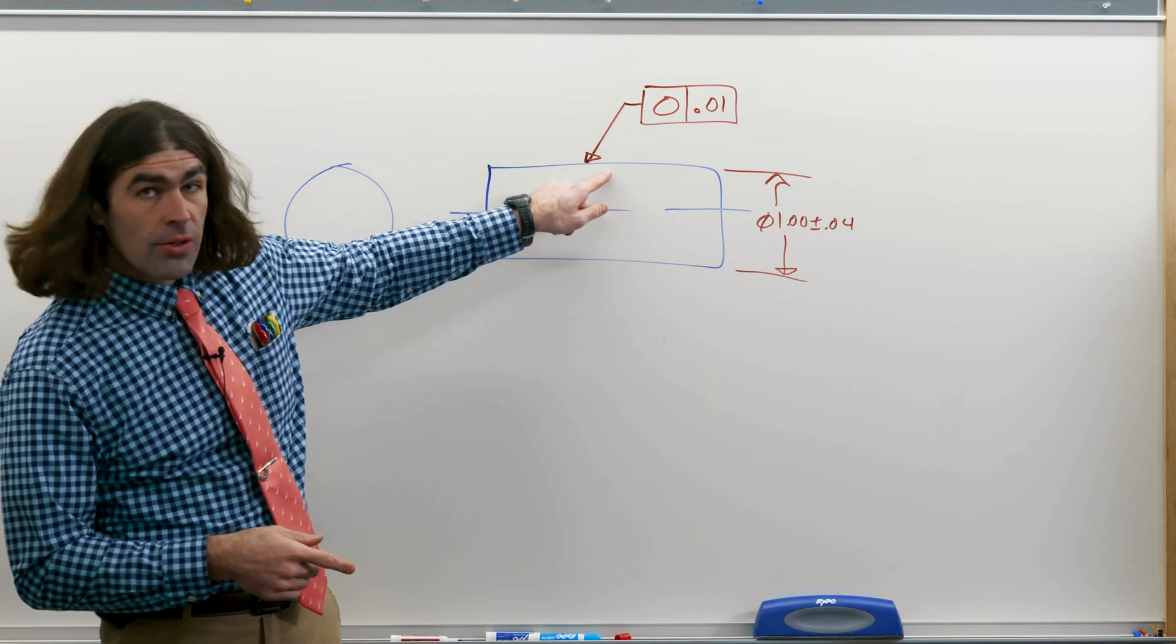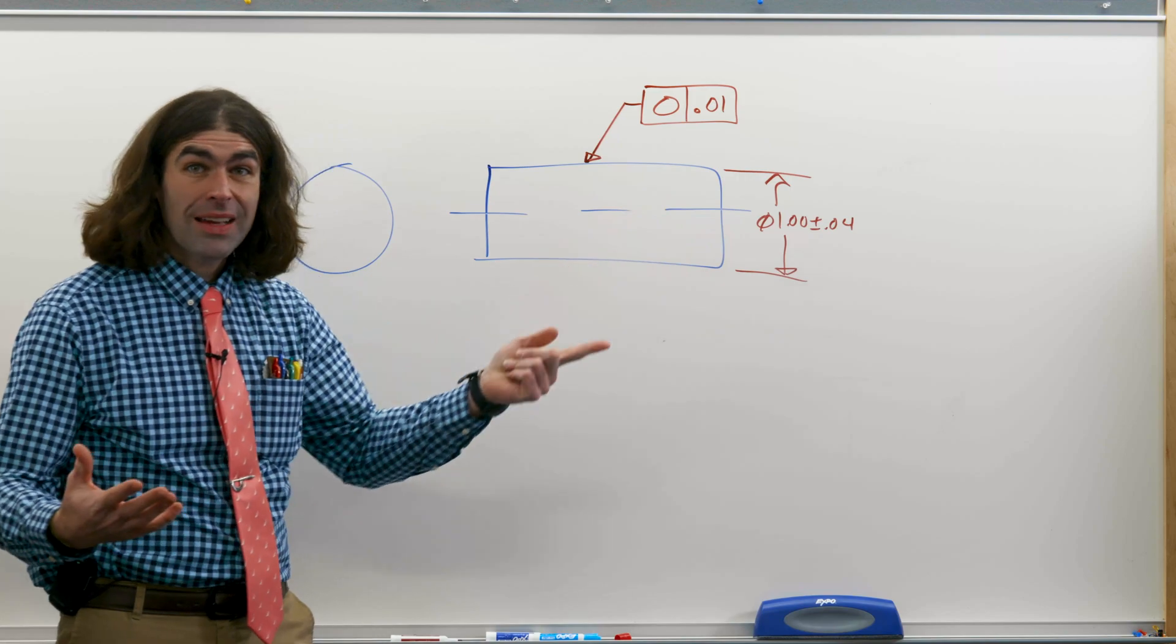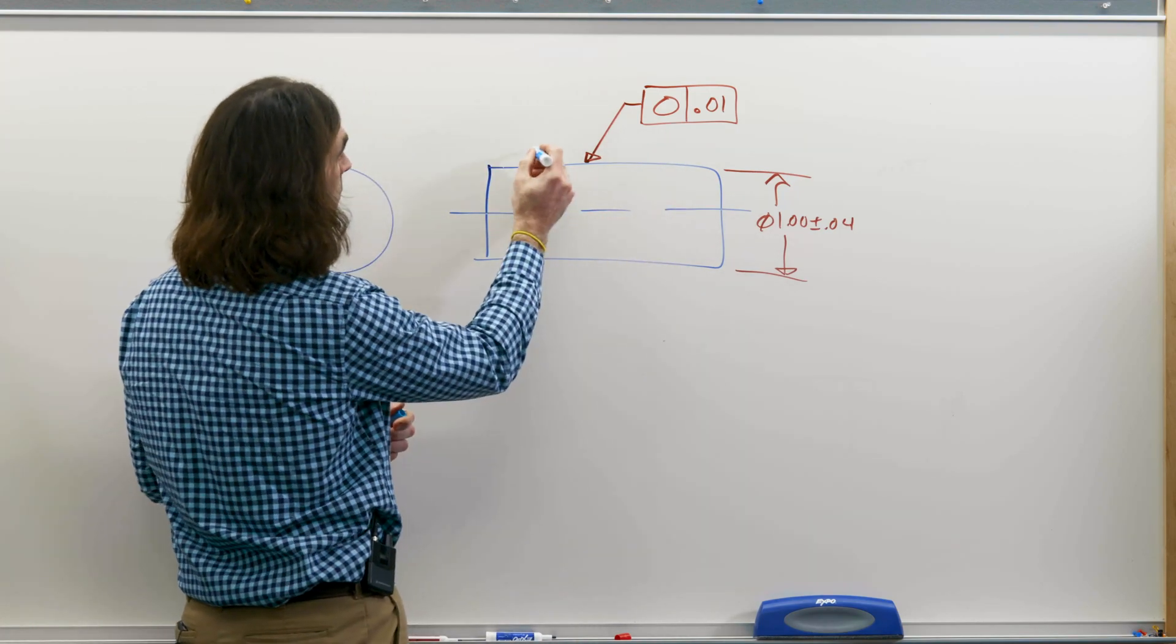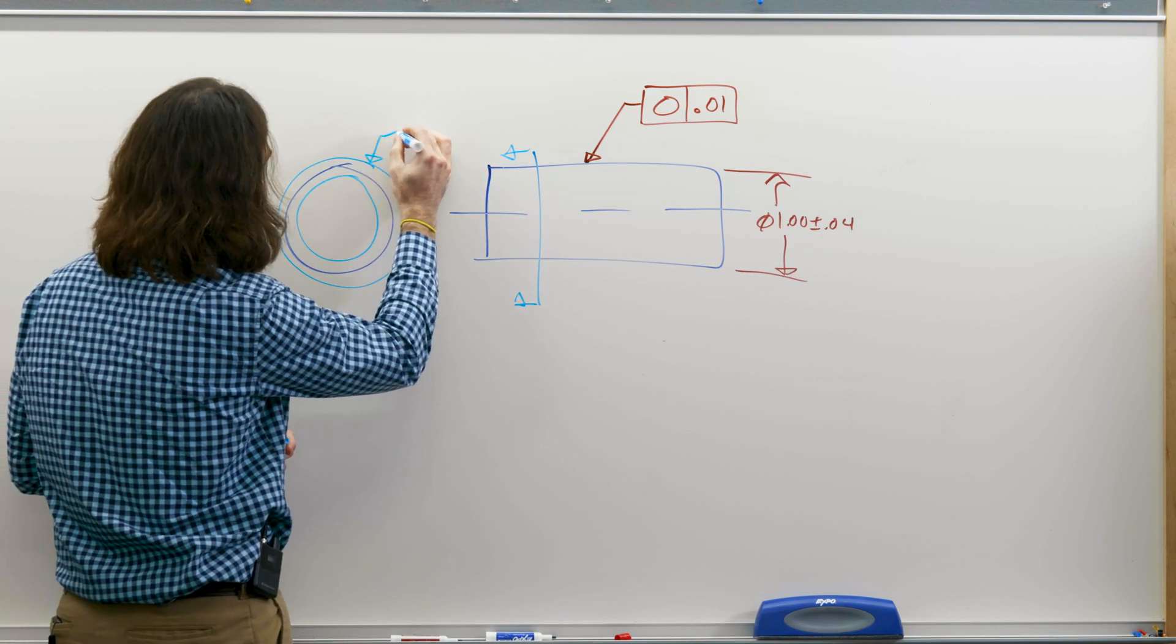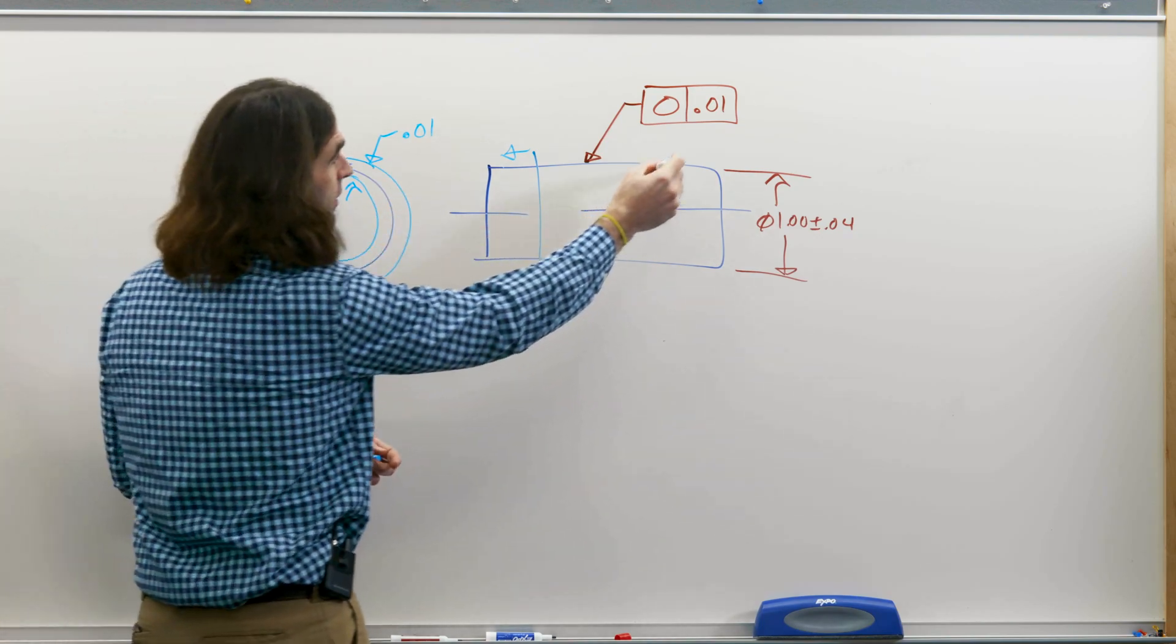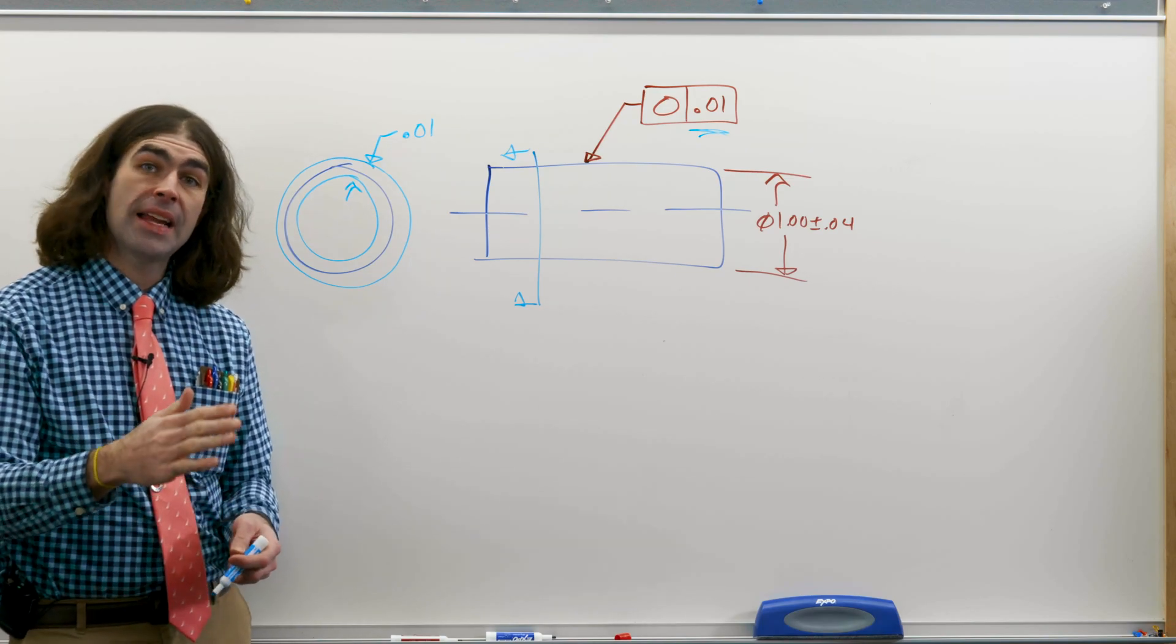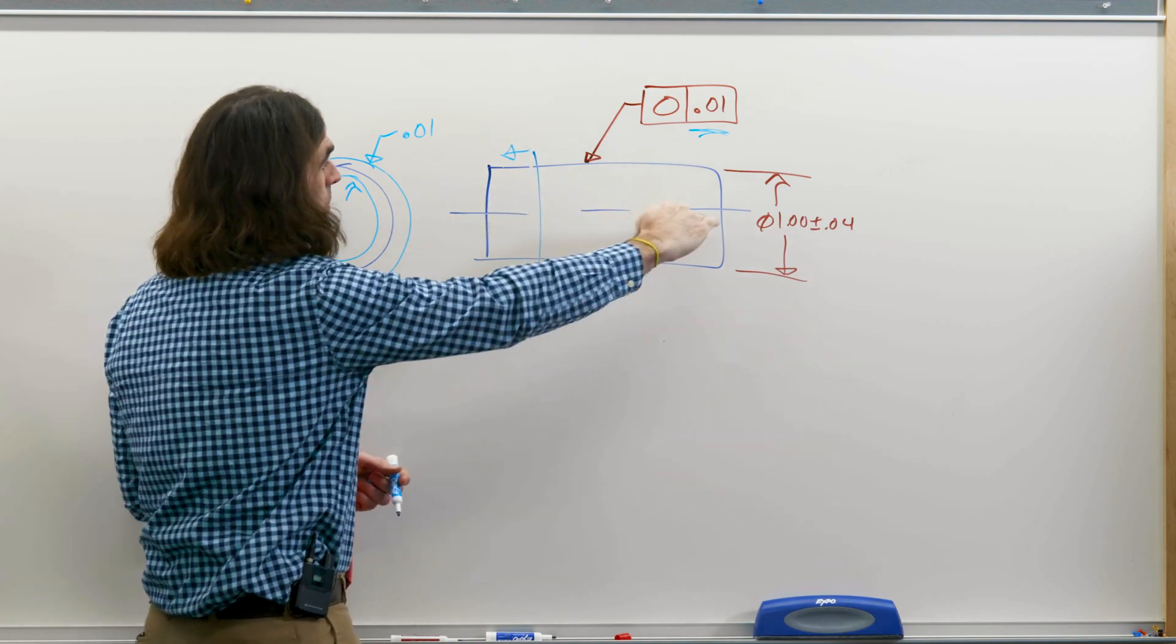Circularity tolerance will be applied with a leader line to the surface, and this is the only way it should be applied. Previous versions of the standard, you could put it with the dimension, but that gets confusing because circularity does not apply to a feature of size. It applies to the surface of the cylinder. So it's saying that at every cross section, say we take a slice right here, we've got two concentric rings, that's the tolerance zone, this distance apart radially. So from here to here, and the surface of the part has to lie within those two concentric rings at every cross section. Now the cross sections should be perpendicular to the axis of the feature.